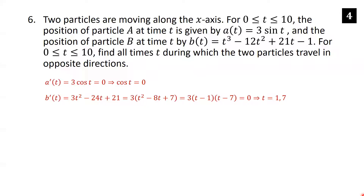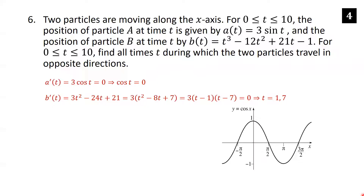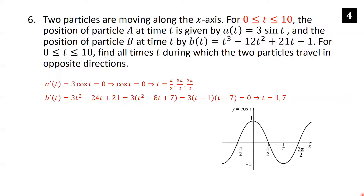Cosine equals zero at t = π/2, 3π/2, 5π/2, etc. We only want values between 0 and 10. Since π ≈ 3.14: π/2 ≈ 1.57, 3π/2 ≈ 4.71, and 5π/2 ≈ 7.85 are all within [0, 10]. But 7π/2 ≈ 11 exceeds 10, so there are only three critical values for particle A.